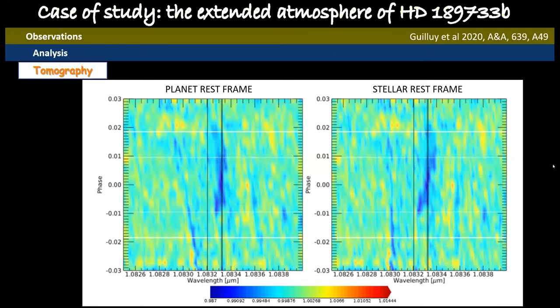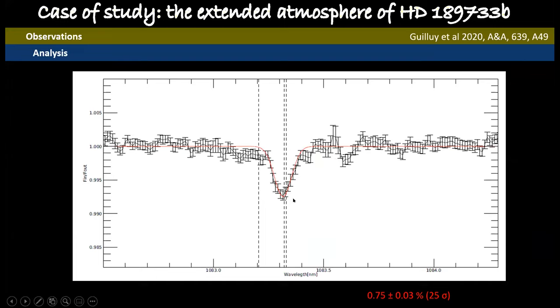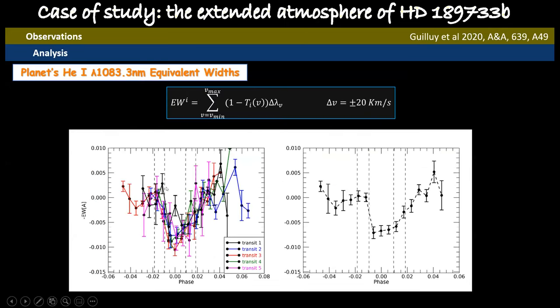If we co-add all the transmission spectra between the contact point T2 and T3, we obtain this in-transit average transmission spectrum that has an average depth of 0.75 percent. Then, as I told you, we have applied also other techniques to measure the excess in-transit absorption due to this extended helium atmosphere around HD 189733b.